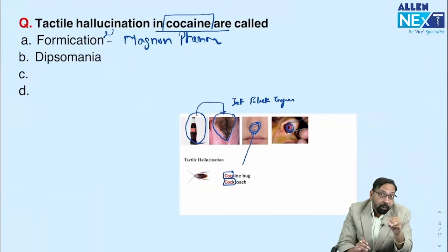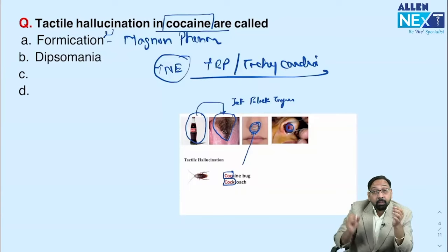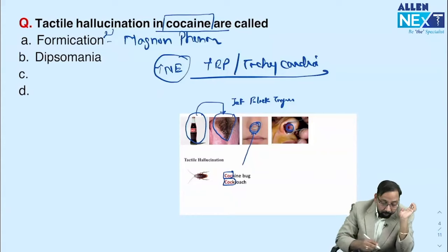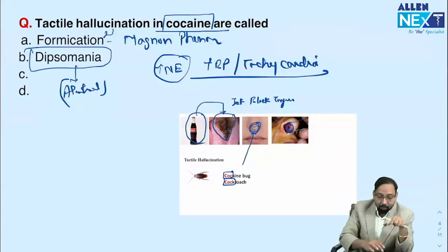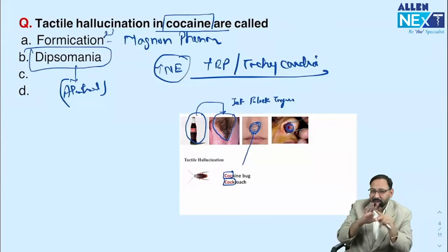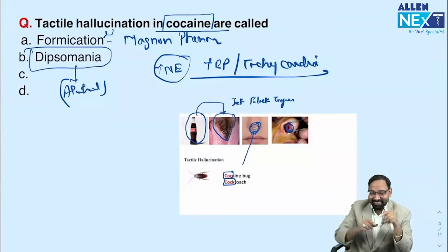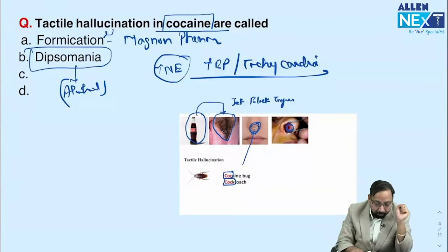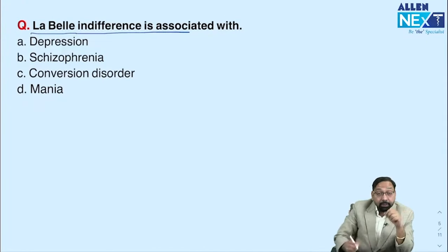Cocaine causes tachycardia and increased norepinephrine, so increased BP and tachycardia. The question asked which is NOT a side effect or symptom of cocaine toxicity. The answer was bradycardia and dipsomania — dipsomania meaning excessive desire to take alcohol. Remember the mnemonic: whenever we take alcohol, we dip our finger first.